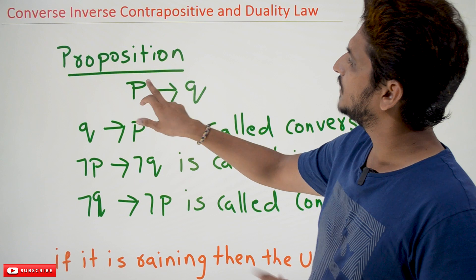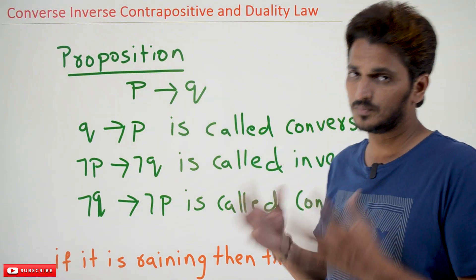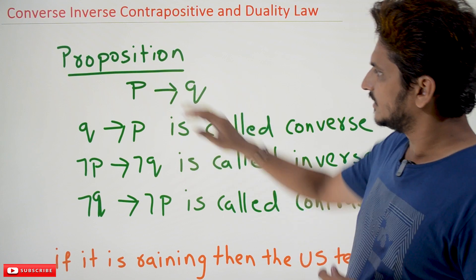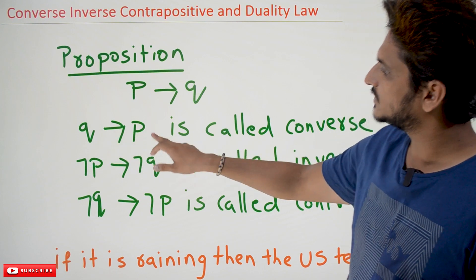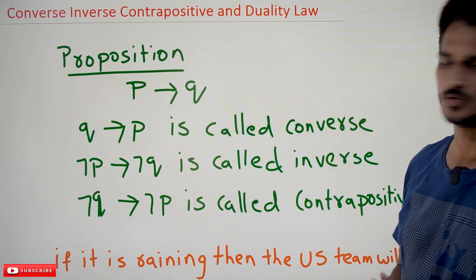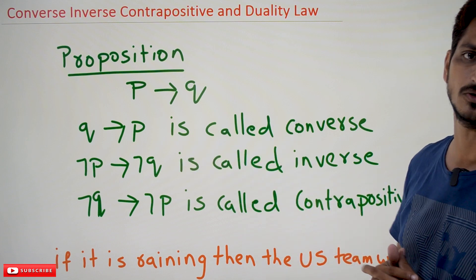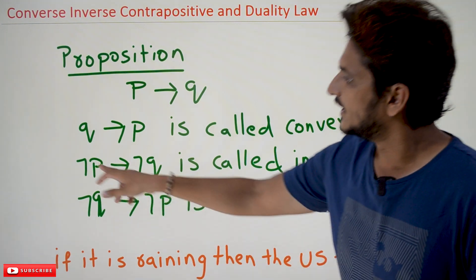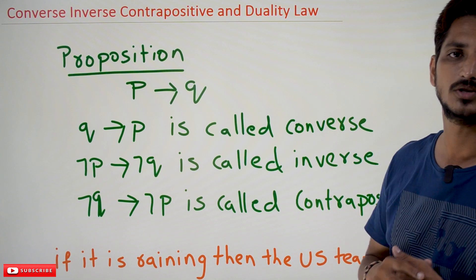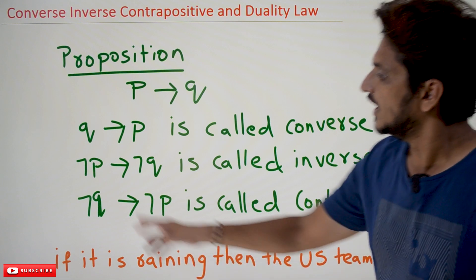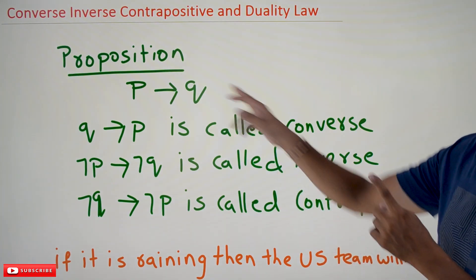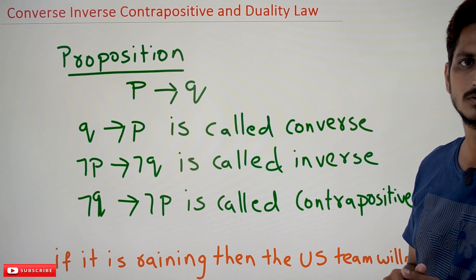If you take a proposition in the form of P implies Q, then Q implies P is called the converse of P implies Q. Similarly, negation P implies negation Q is called the inverse of P implies Q. And negation Q implies negation P is called the contrapositive of P implies Q.